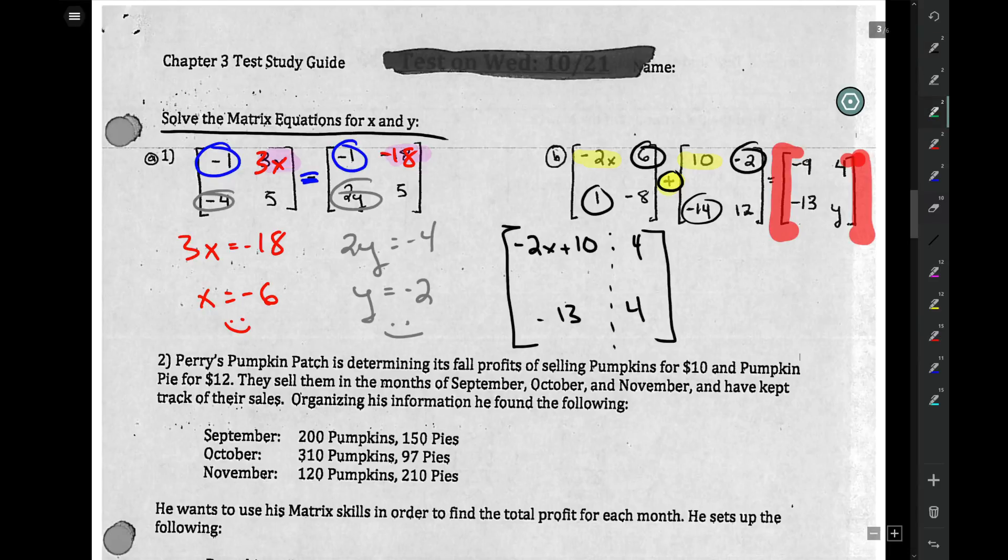Well, negative 2x plus 10 is really negative now. Subtract 10, and you get negative 2x equals negative 19, so x equals 19 over 2. You can leave it as a fraction. What this also means is y must be 4. It's given to you. Easy.